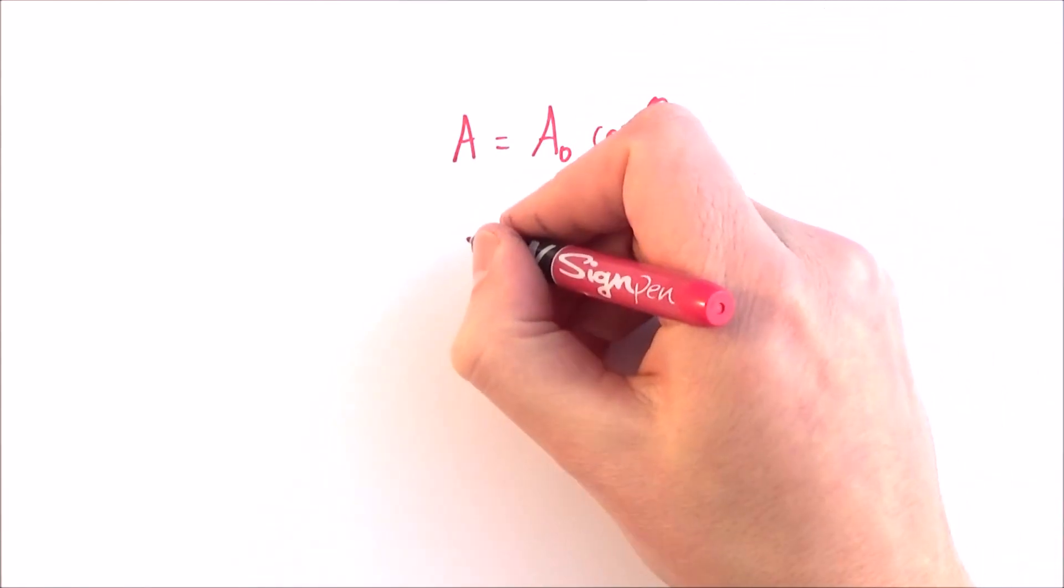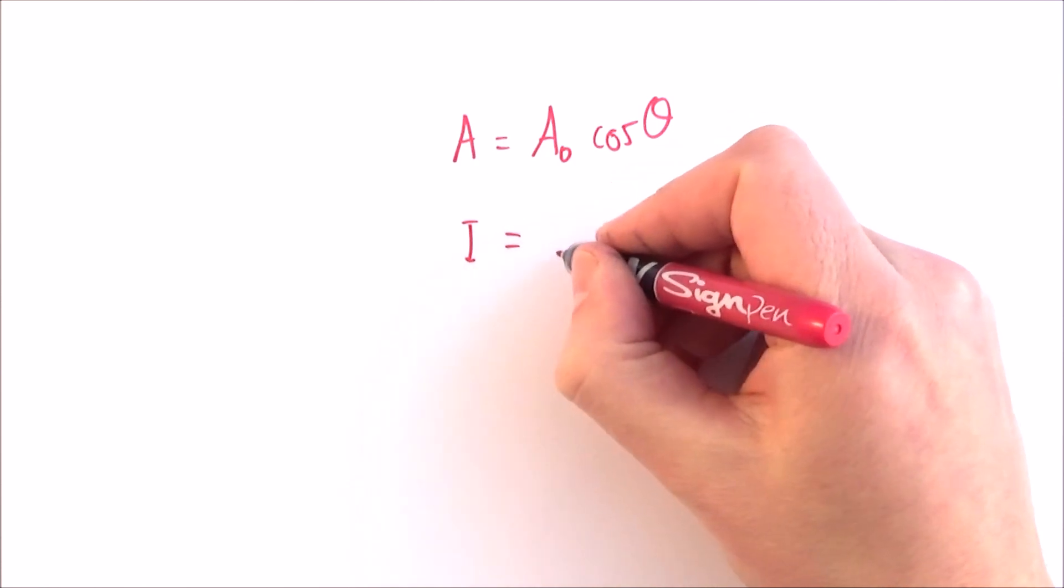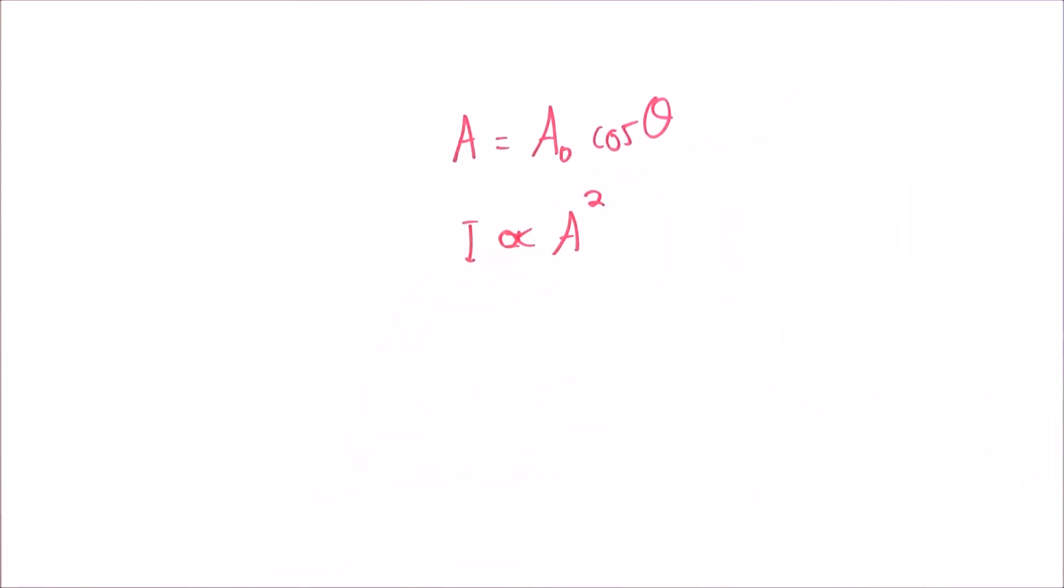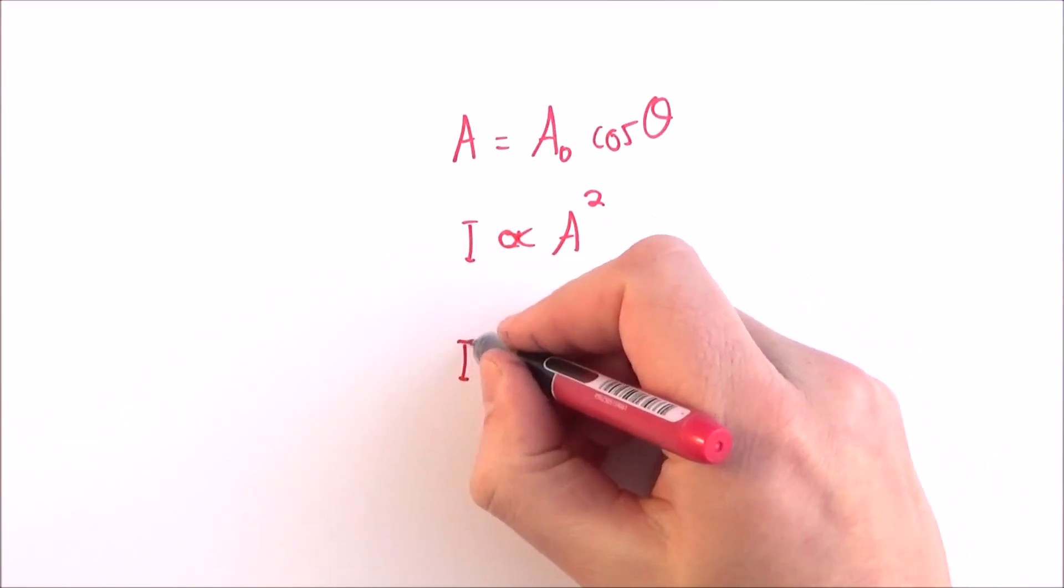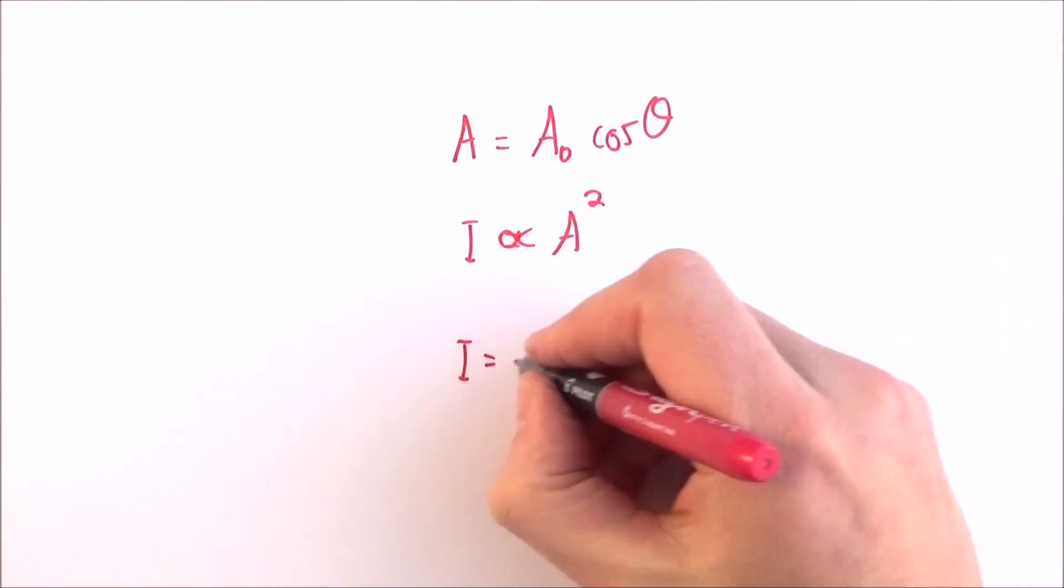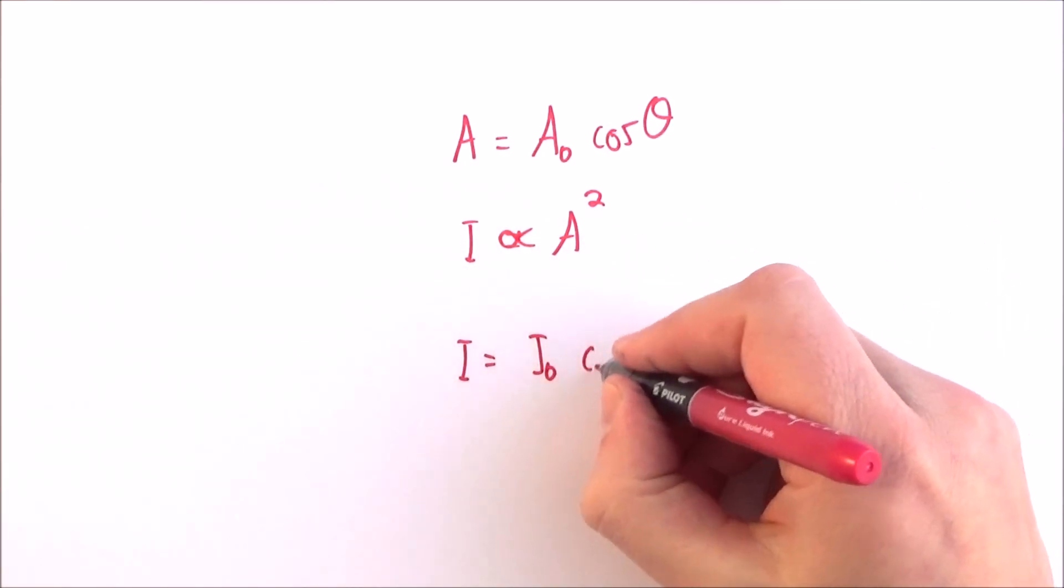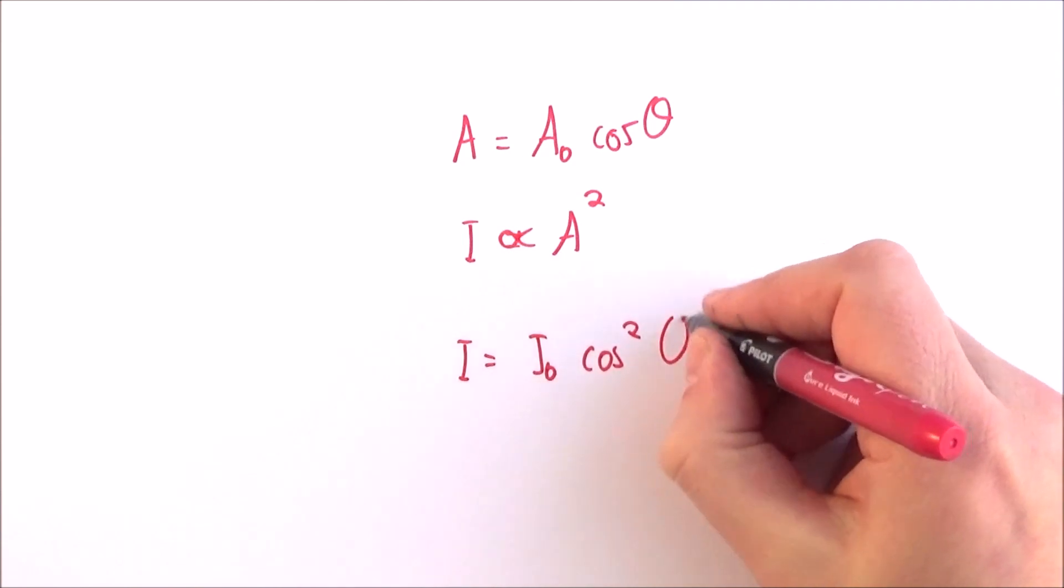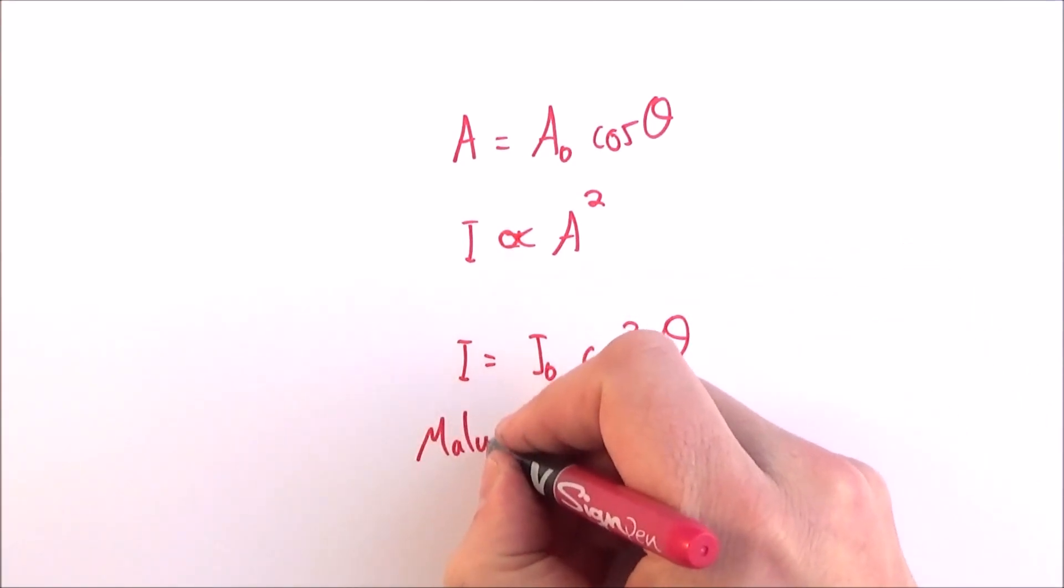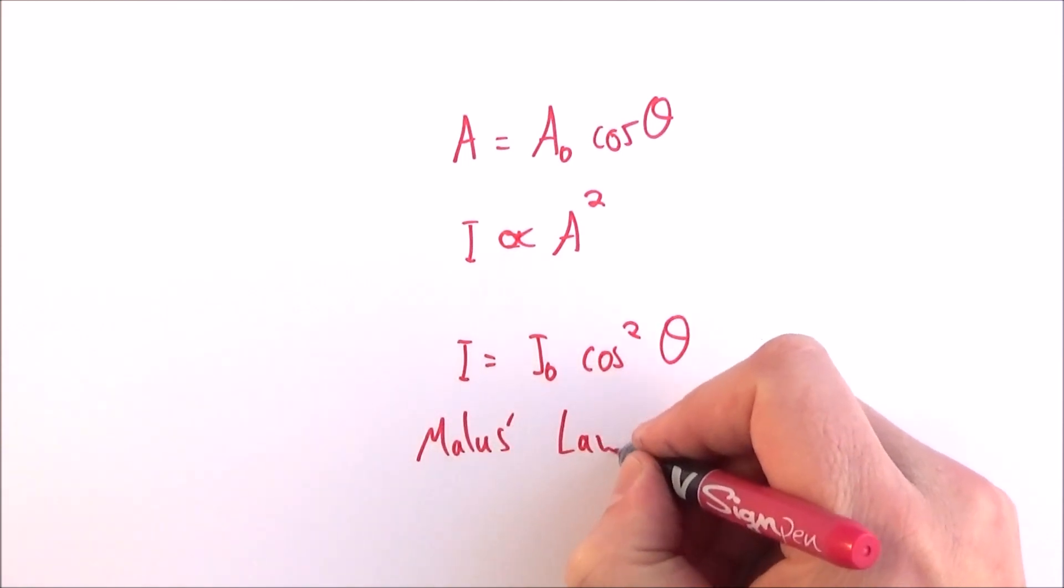So we can say that the intensity of light transmitted through the analyzer equals the original intensity times cos²θ. This is known as Malus's law.